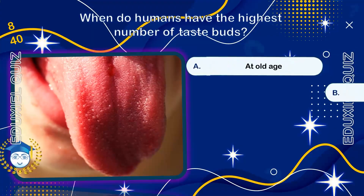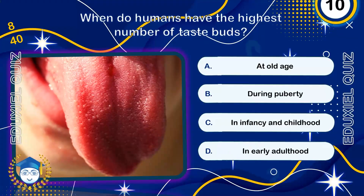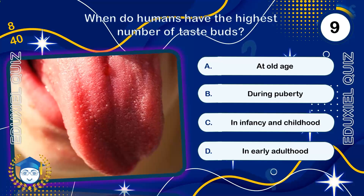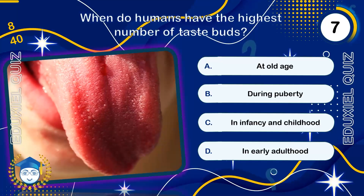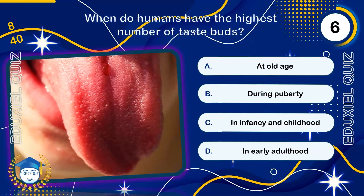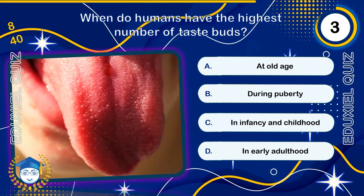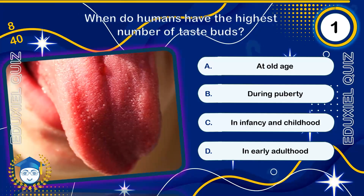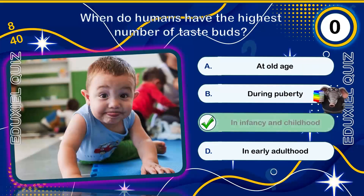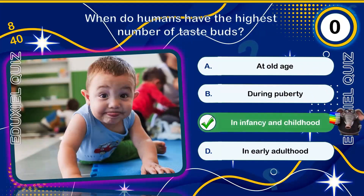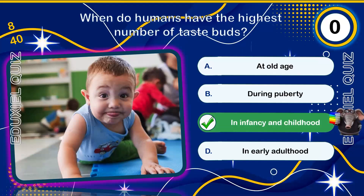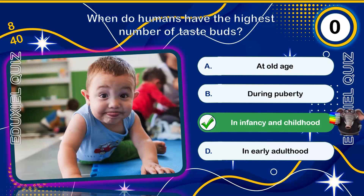When do humans have the highest number of taste buds? In infancy and childhood. As children, we have taste buds on the cheeks and roof of the mouth that disappear with age, which is why children can be much more sensitive to strong flavors.